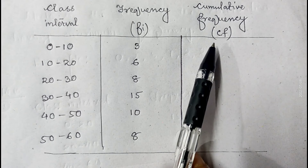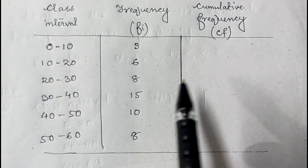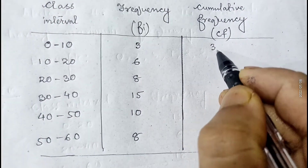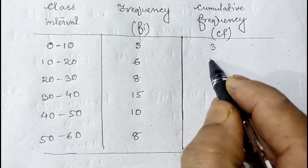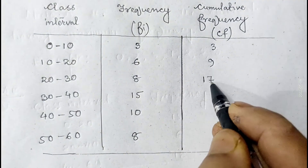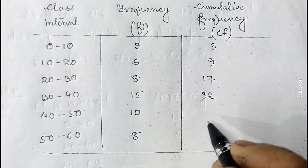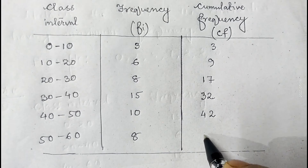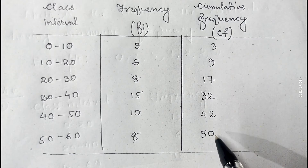To calculate the cumulative frequency: the first frequency is 3 so it remains 3. Then 3 plus 6 is 9. 9 plus 8 gives 17. 17 plus 15 gives 32. 32 plus 10 gives 42, and 42 plus 8 gives 50. By adding the previous frequencies we get the cumulative frequency.